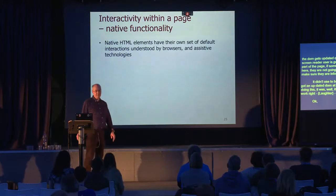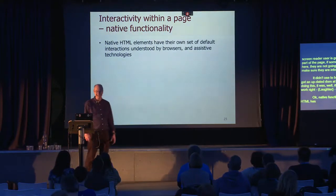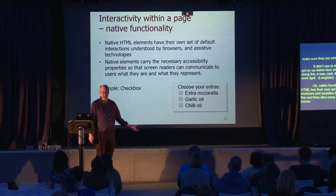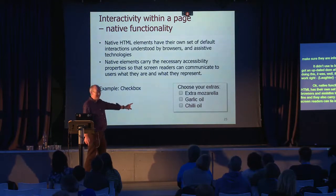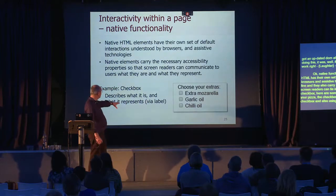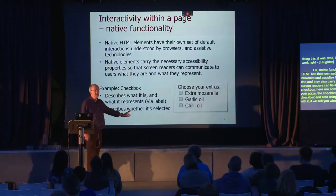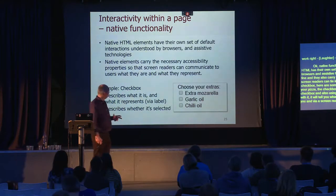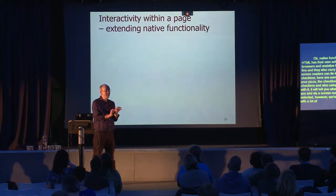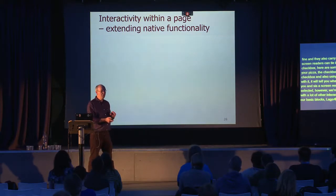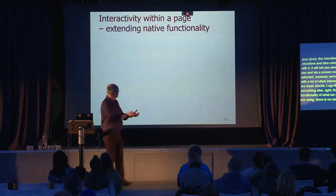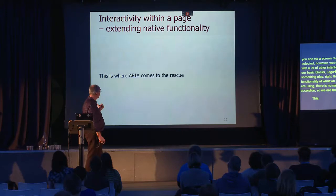Native HTML elements have their own default interactions and carry necessary properties so screen readers can tie into them. For example, a checkbox — using the label associated with it — will tell a screen reader what it represents and whether it's selected. However, with accordions and other interactive components, we're using basic HTML building blocks to build something that extends native functionality. There is no native HTML component for an accordion, so we build it from other things — and this is where ARIA comes to the rescue.